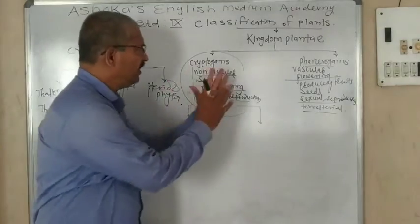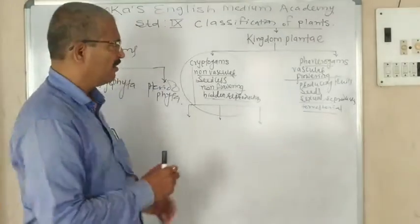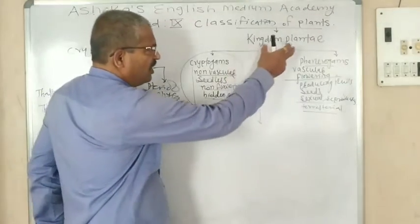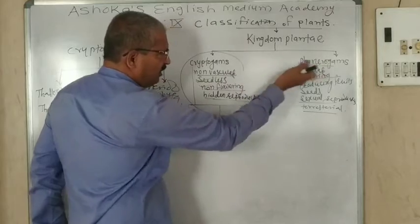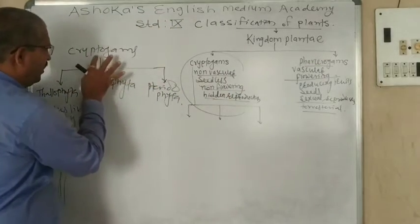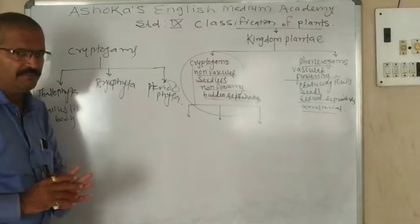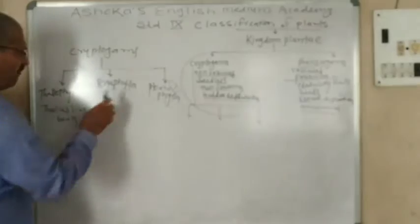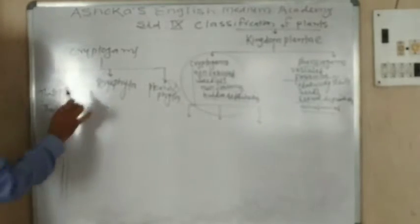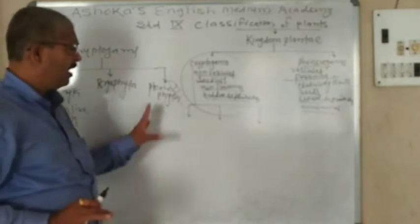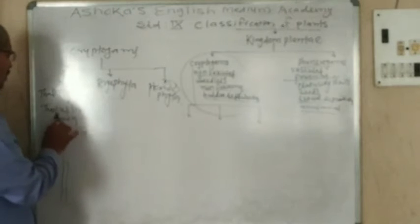Now we are going to study specifically about the Cryptogamae. Kingdom Plantae is divided into two parts — Cryptogamae and Phanerogamae. Cryptogamae is divided into three subdivisions: one is Thallophyta, second is Bryophyta, and third is Pteridophyta.